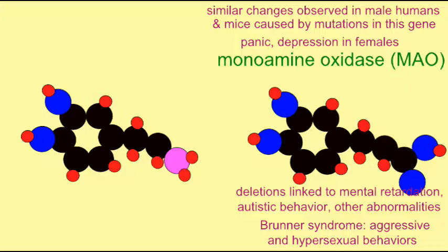So it is pleiotropic in that one mutation can have multiple effects.